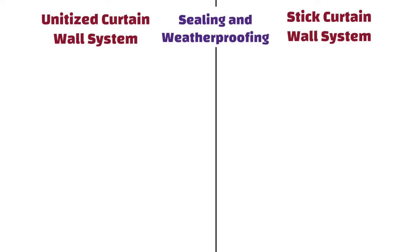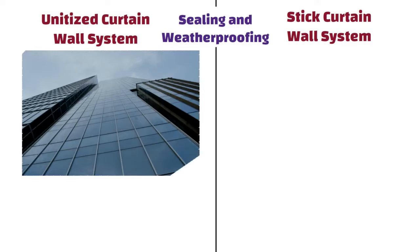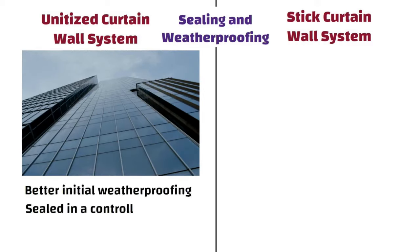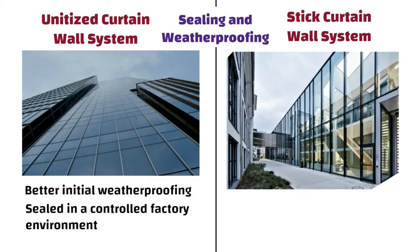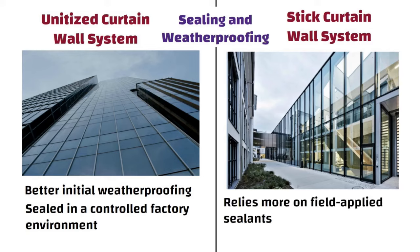Sealing and Weatherproofing: Unitized systems have better initial weatherproofing as units are sealed in a controlled factory environment. Whereas, in the case of stick systems, weatherproofing relies more on field-applied sealants, which may have a higher risk of installation error.